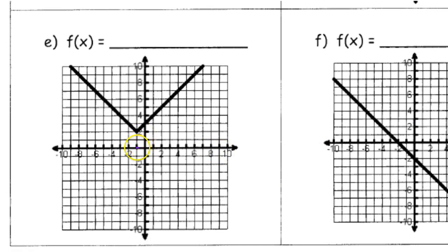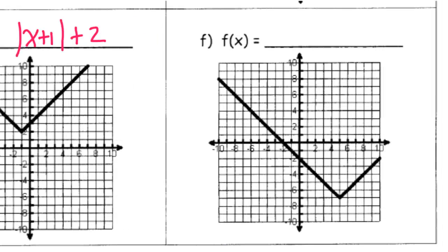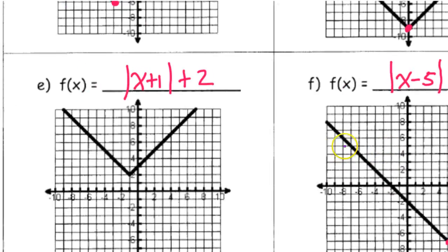This one is left 1, up 2. Left 1 would be x plus 1 on the inside, and up 2 would be plus 2 on the end. The slope is up 1 right 1, so I don't need anything for that. And then the last vertex is right 5, down 7. For right 5 I need x minus 5, and down 7 is a minus 7. The slope is again up 1 right 1, so nothing in front. And that is it for this worksheet.